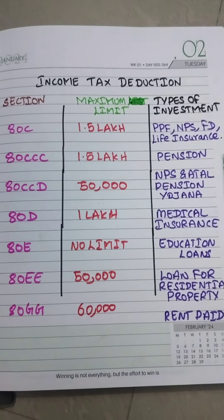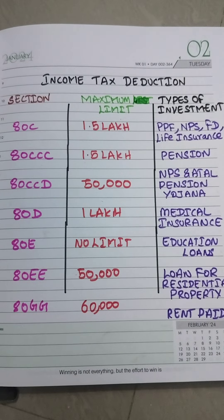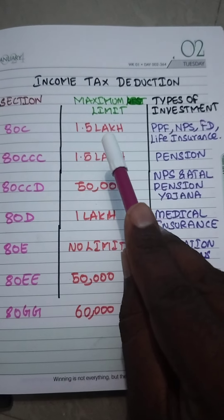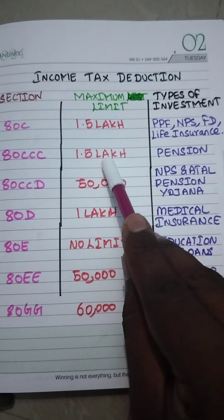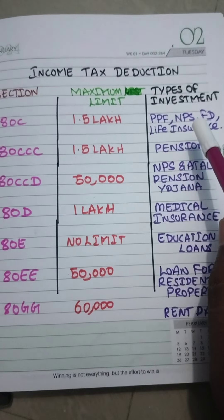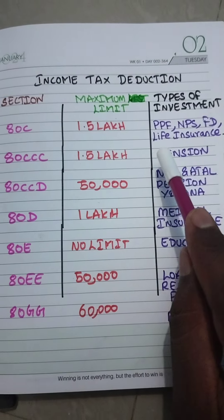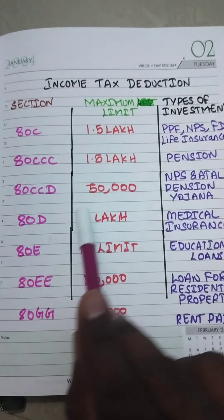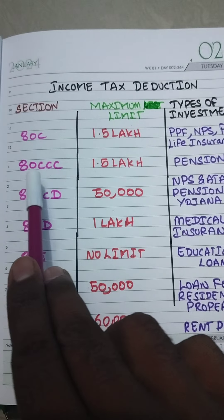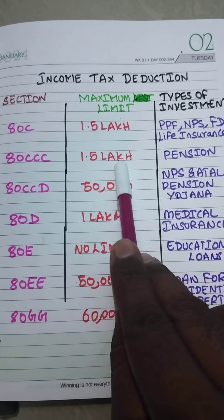Under Section 80C, the maximum limit is 1.5 lakh. You can submit PPF, NPS, fixed deposit, and life insurance documents. The second one is Section 80CCC, where the maximum limit is also 1.5 lakh, and you can submit pension-related documents.